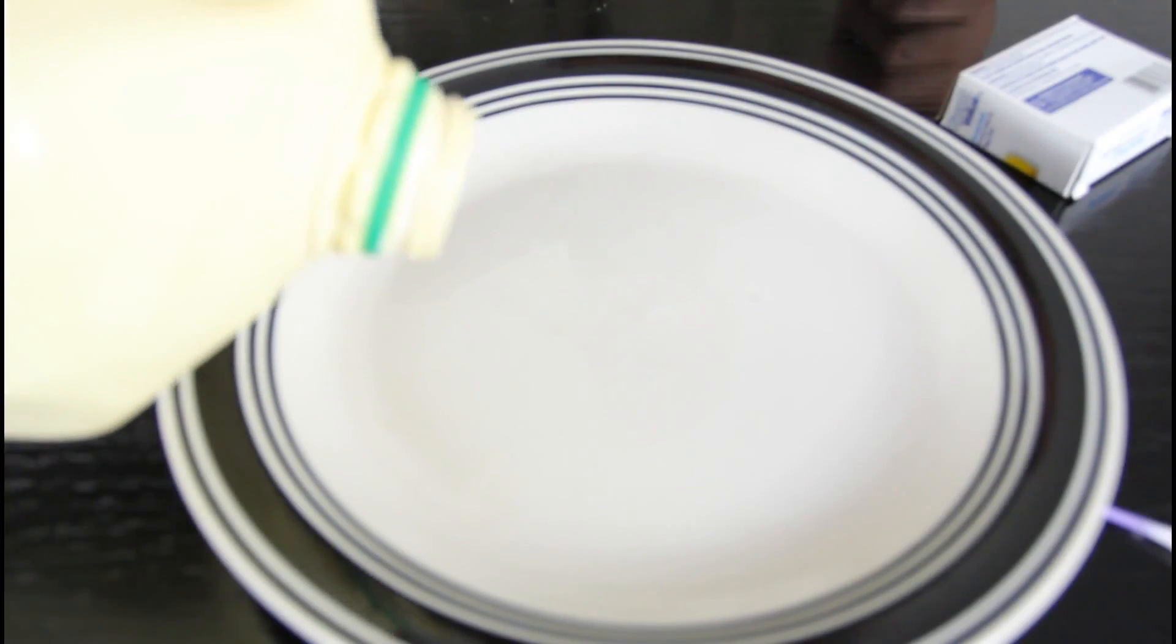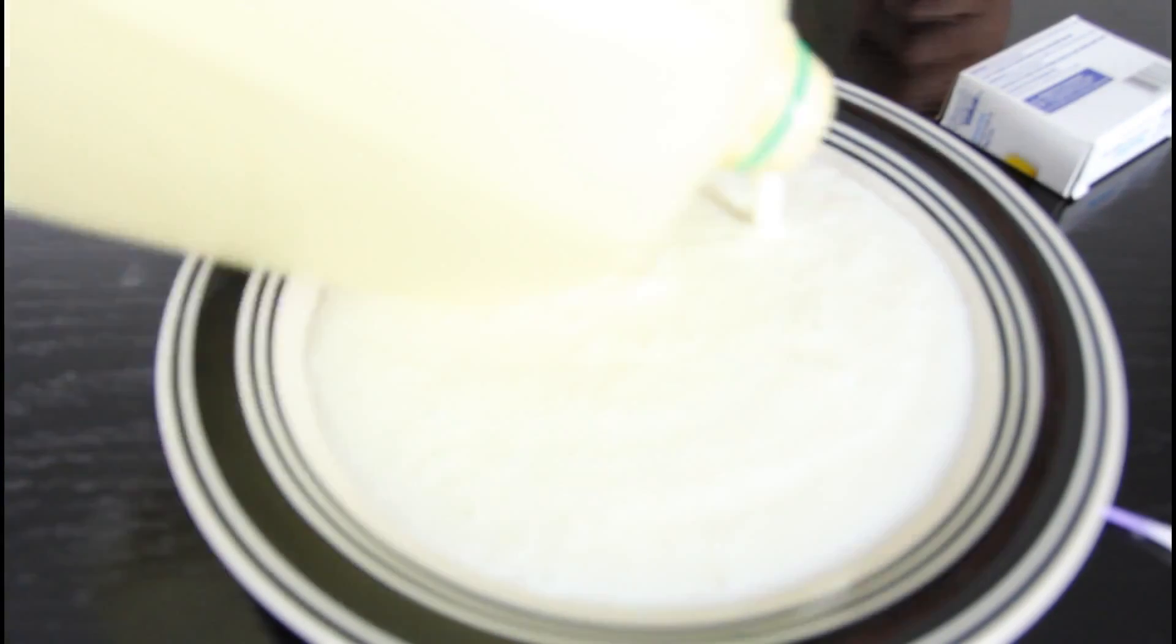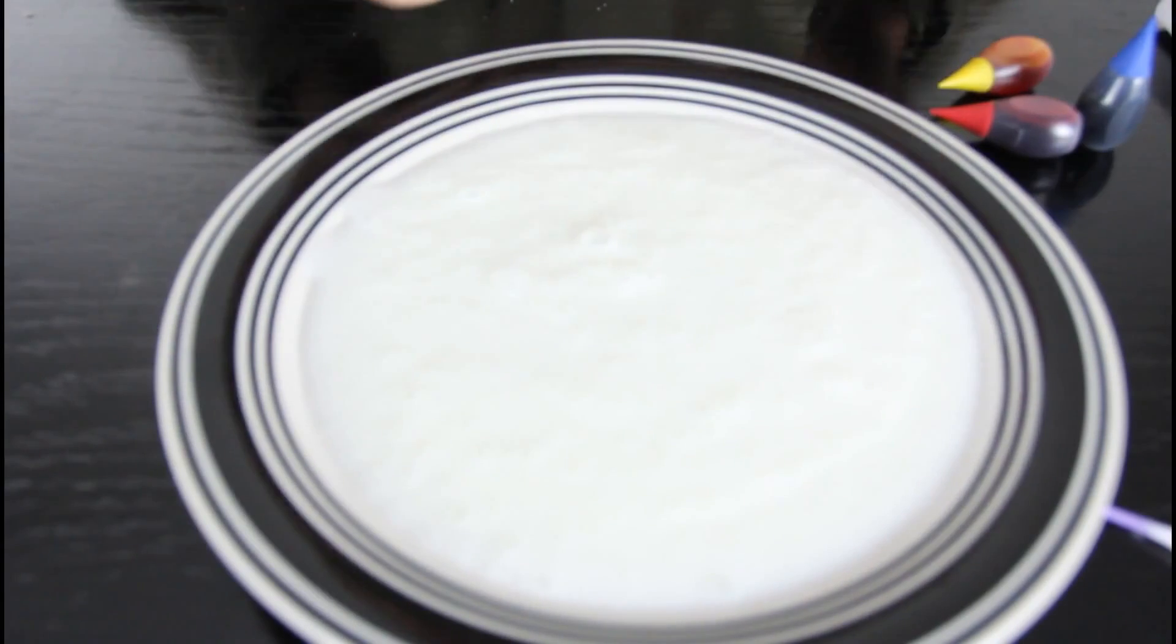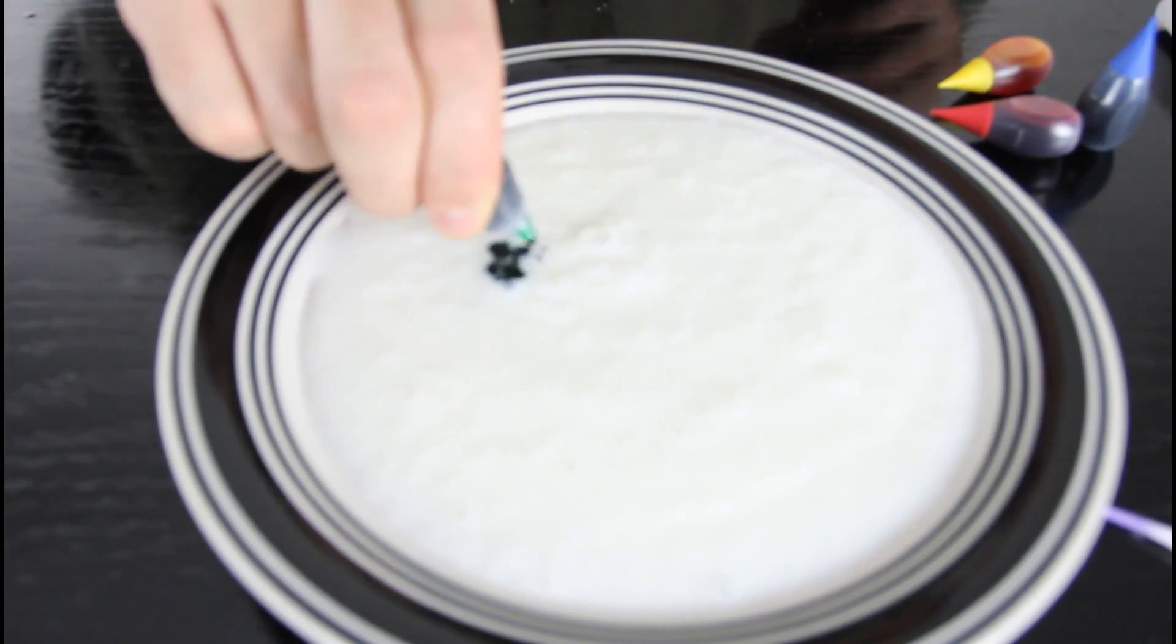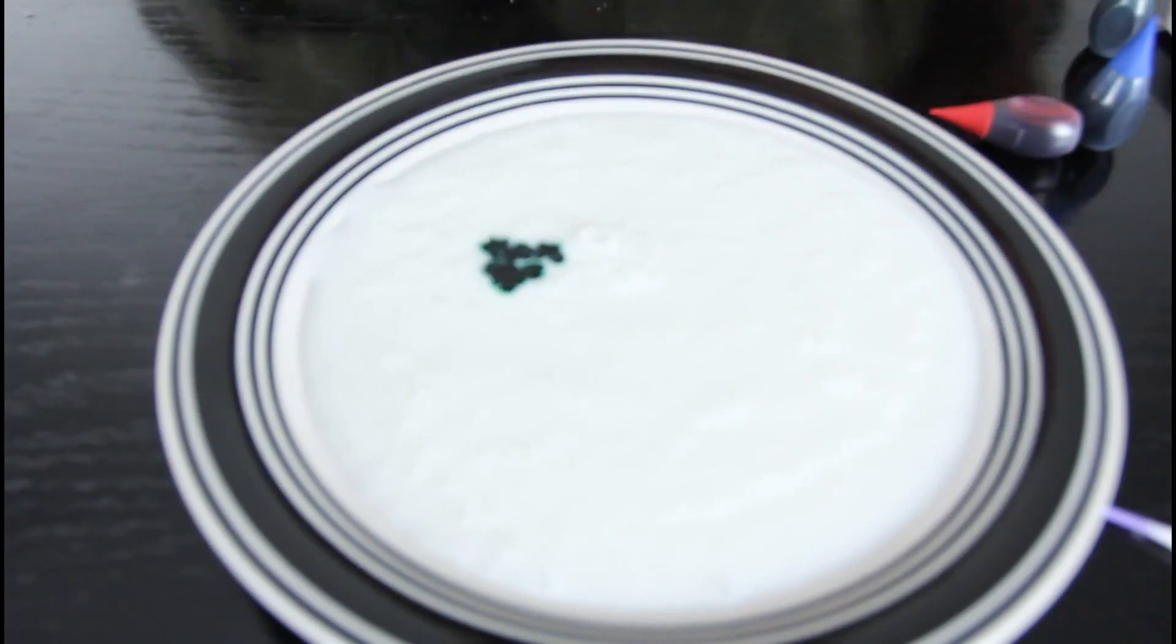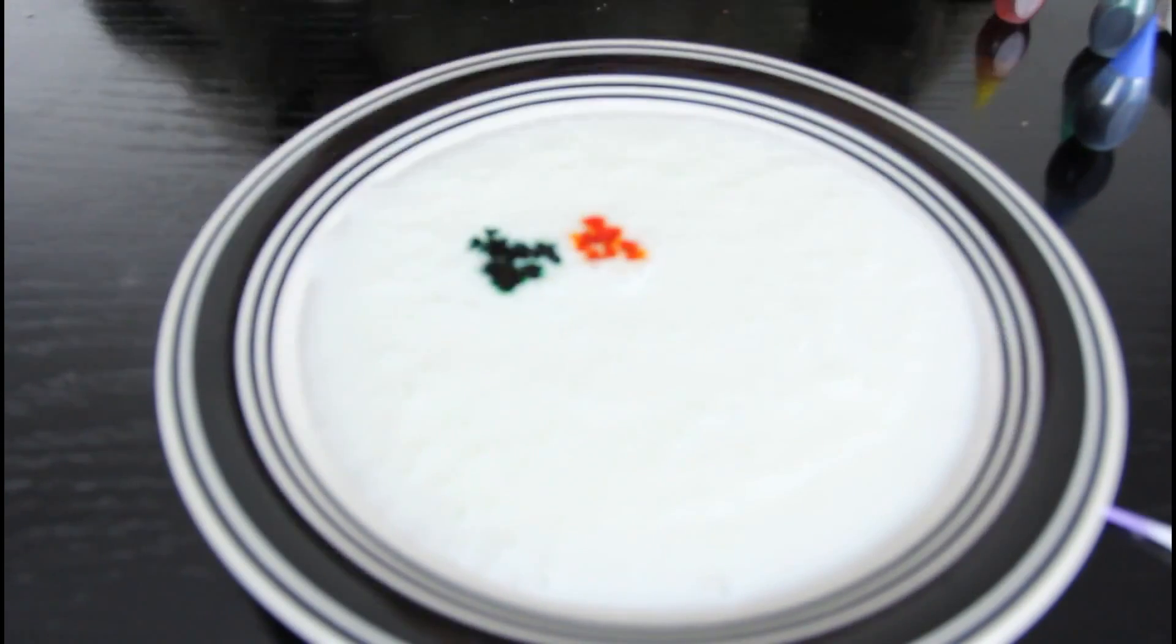First we're gonna pour buttermilk in the plate. Then we're gonna grab our food coloring and drop it in one place like that. There's green, there's yellow, there's red.